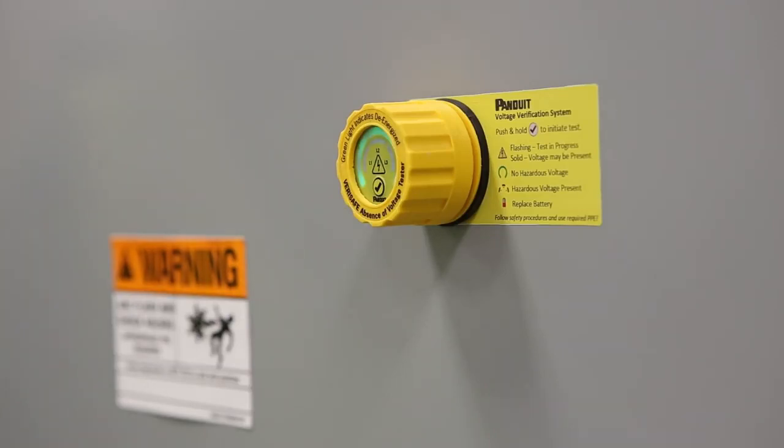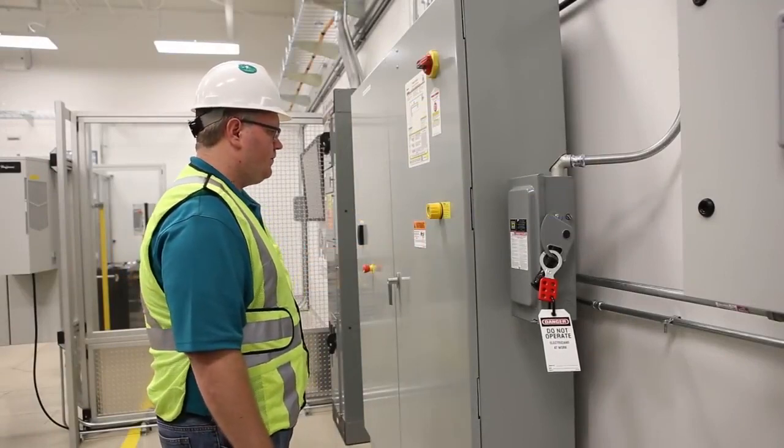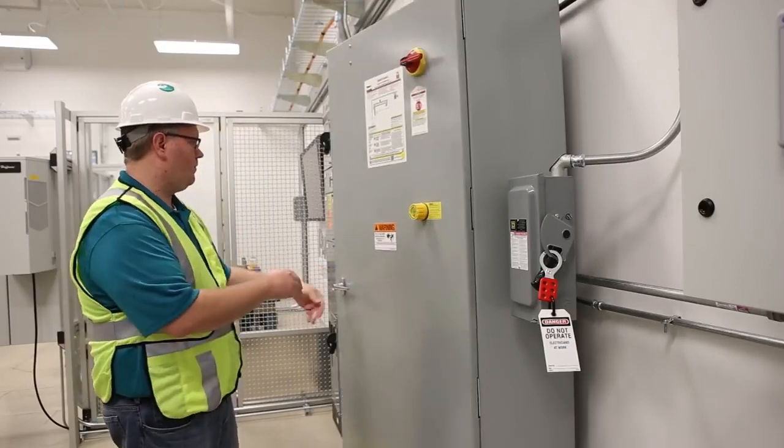If the equipment has tested safe, then the device provides a green light. If the test fails, the device gives a solid yellow caution light. In this case, we get a green light indicating the absence of voltage is confirmed.